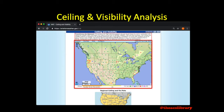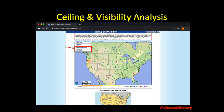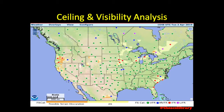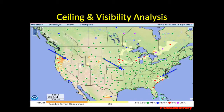The top map may depict flight category, visibility, or ceilings of each station depending on the user selection under the weather tab. The flight category view shows a green circle over the stations reporting VFR, blue for those reporting marginal VFR, red for IFR, and purple for low IFR.